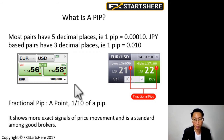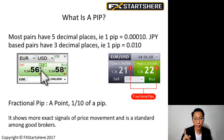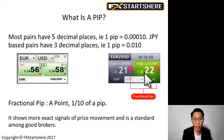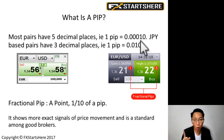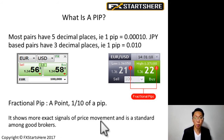The fractional PIP is the fifth decimal place. For example, in 1.34568, the 8 is the fractional PIP, also known as one point. Similarly, in 1.36211 or 1.36228, the 1 and the 8 are the fractional PIPs. So one PIP is 0.0001, and one point is 0.00001 — the fifth decimal place. It shows more exact signals of price movement and is a standard among good brokers.